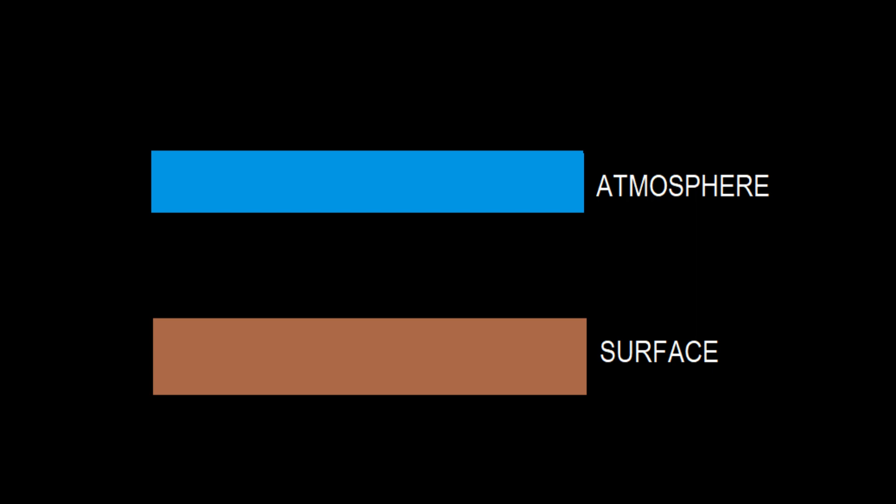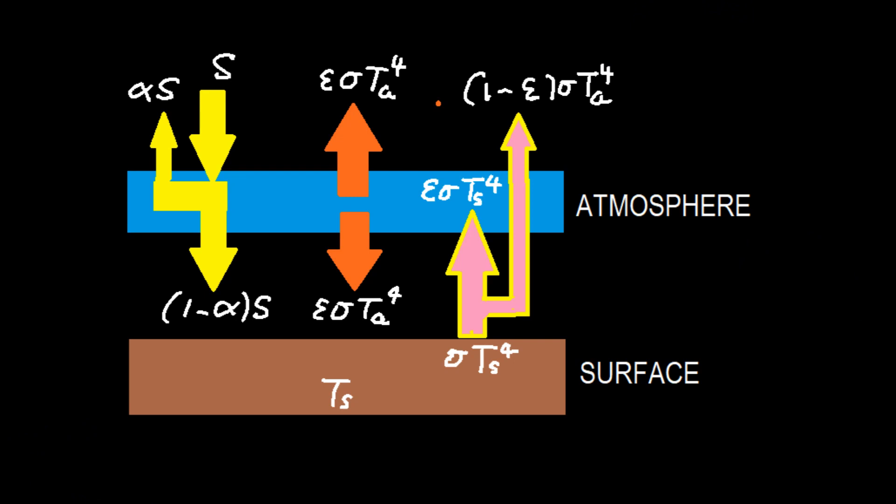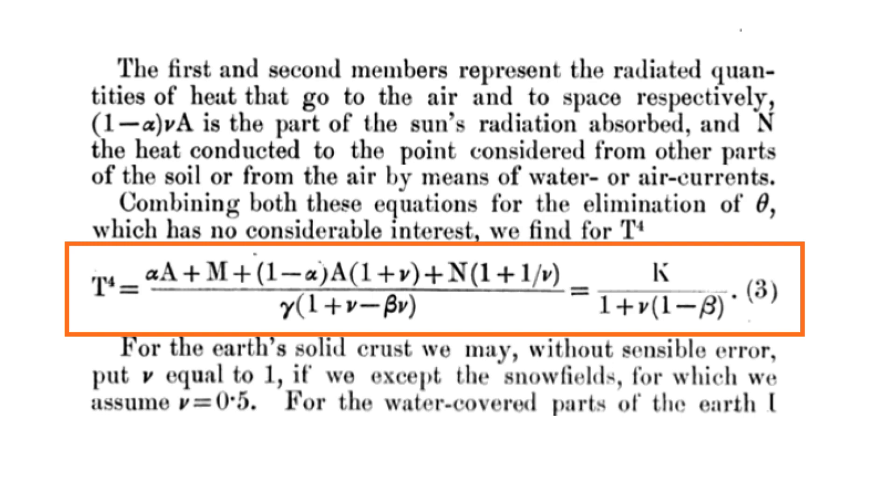The blue rectangle represents our atmosphere with its uniform temperature Ta. The orange rectangle is the ground with its equilibrium temperature Ts. Arrhenius assumes thermal radiation can be described by flux, like heat flow. The downward radiation toward the surface contains transmitted solar shortwave and downward atmospheric longwave, while the atmosphere is only heated by the upward longwave emitted by the surface. At the top of the atmosphere, the outgoing longwave radiation is the sum of the transmitted surface radiation and the upward atmospheric radiation. When both temperatures reach thermal equilibrium, this formula can be derived according to the energy conservation law.